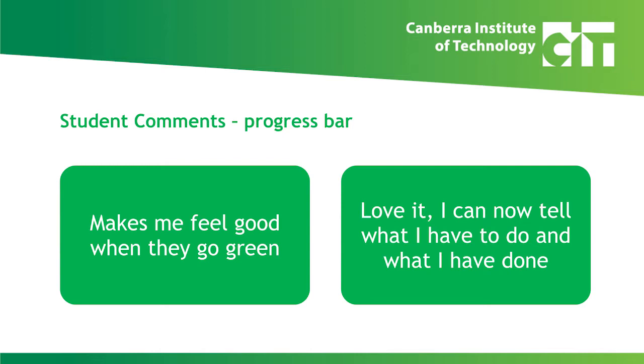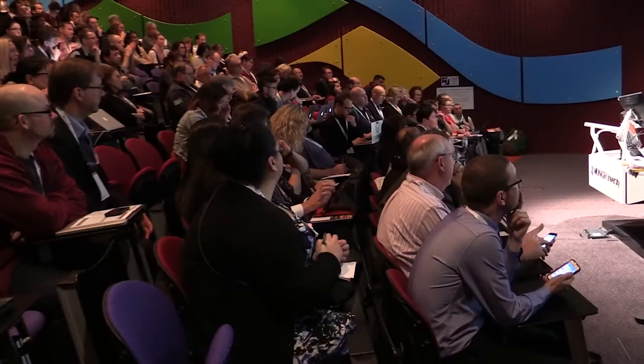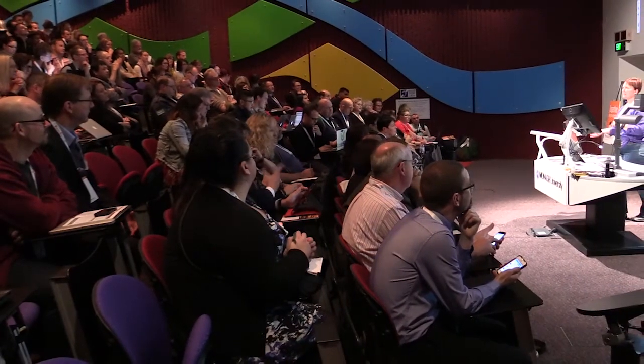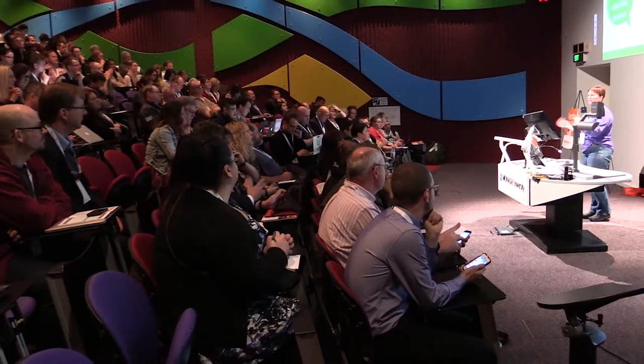Student comments have been things like 'that makes me feel good when it goes green.' They love being able to see what they've done and what they have to do next. It's a really important visual for students — we had the course completion block but most students didn't even know they could click on it to get more information. We haven't made the progress bar automatically included in courses yet. We did that with the course completion block — it's now system-wide and teachers have to remove it if they don't want it. The progress bar is something we're looking to make a standard item in every course next year.